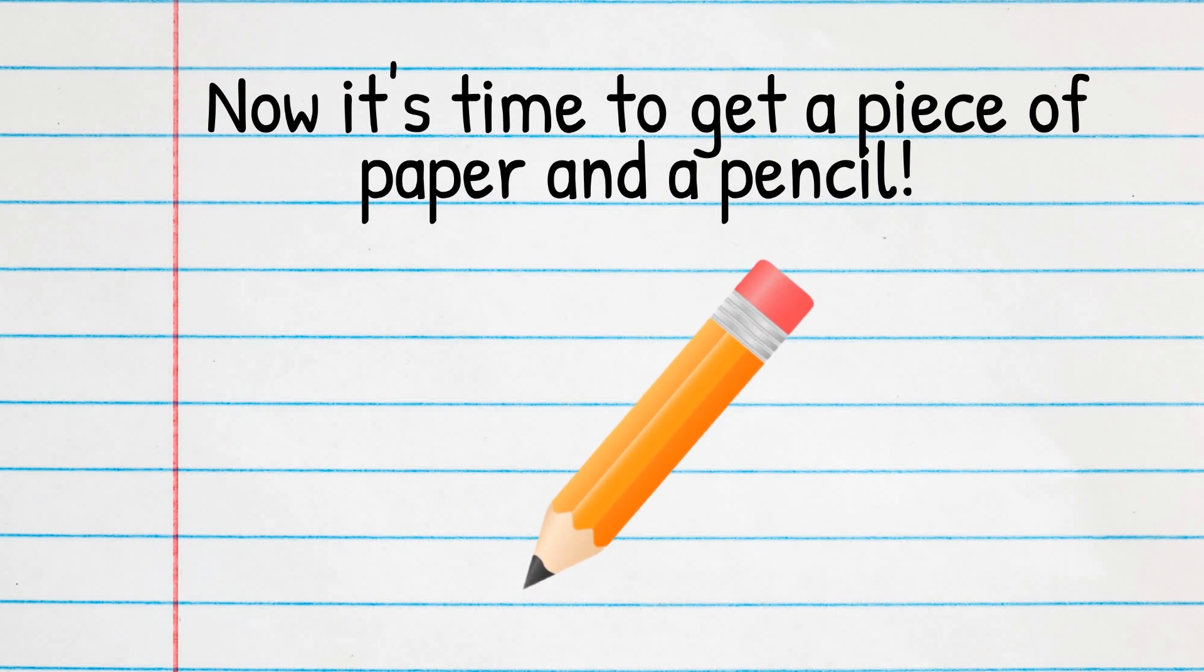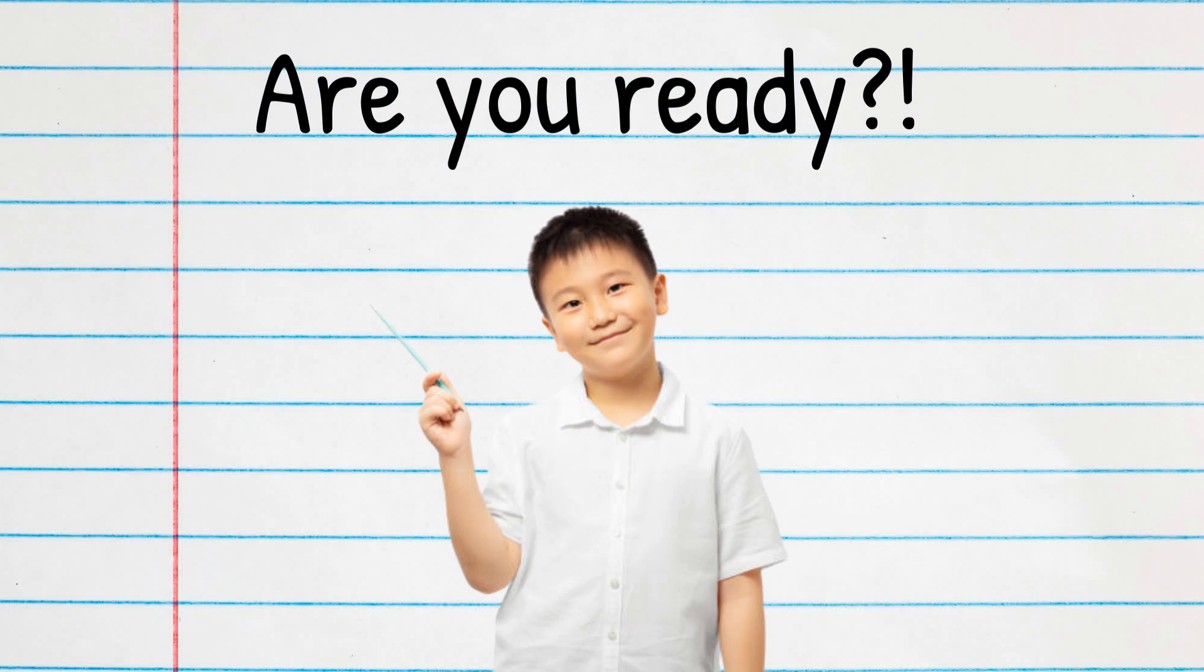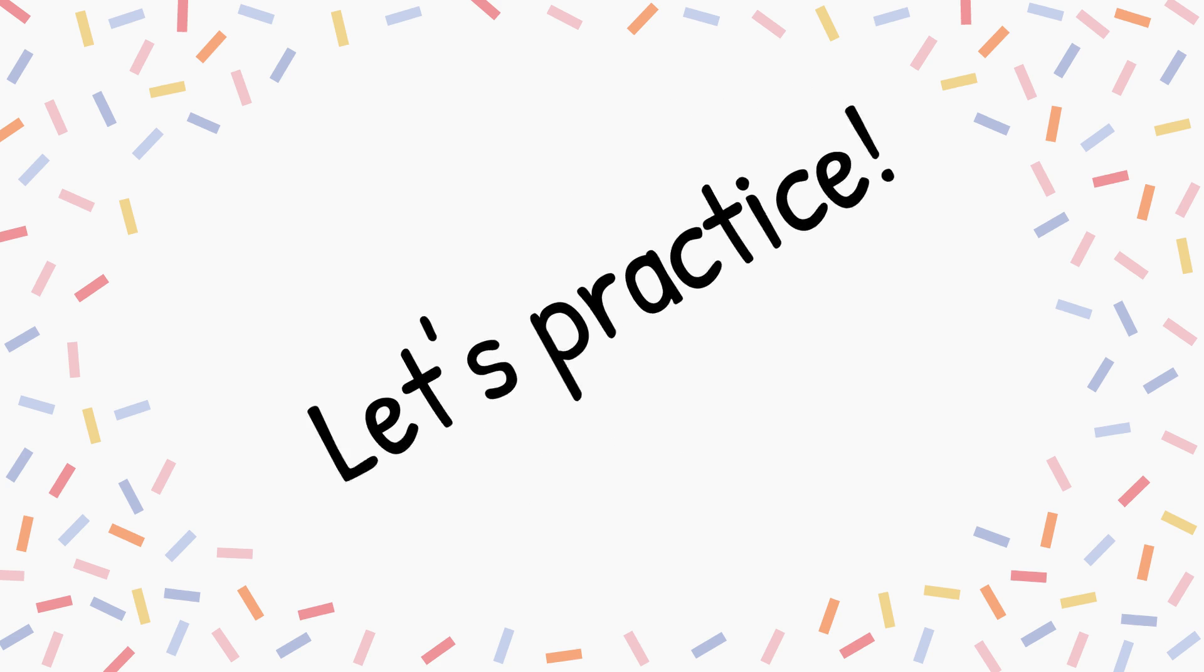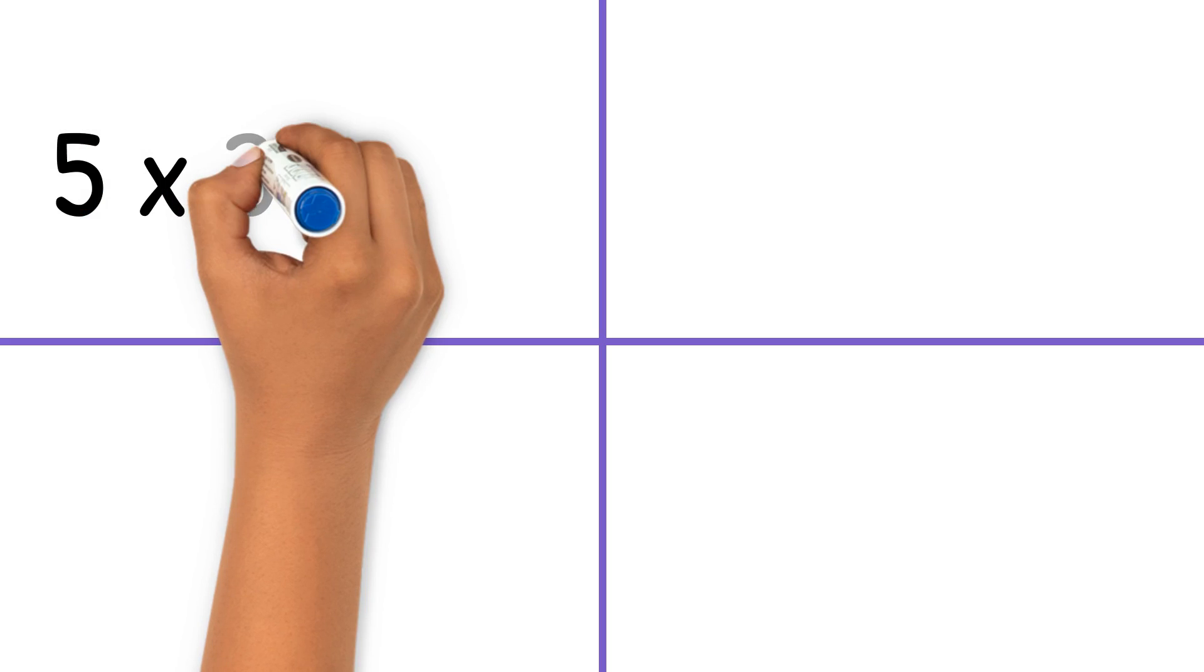Now it's time to get a piece of paper and a pencil. Are you ready? Let's practice. Draw 2 lines on your paper just like this so you have 4 work sections. In the first section, write the equation 5 times 3 equals.